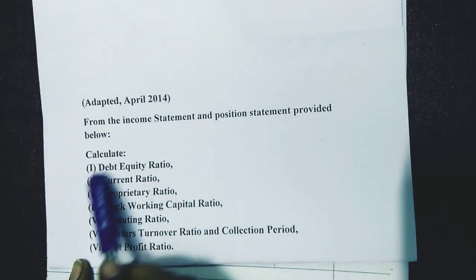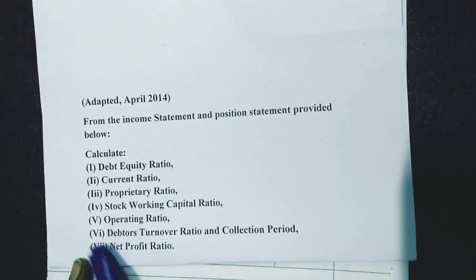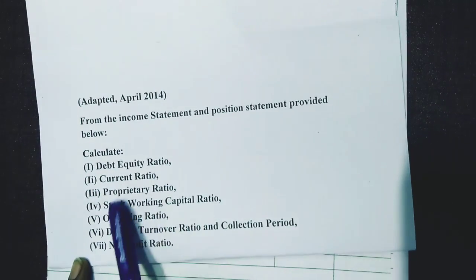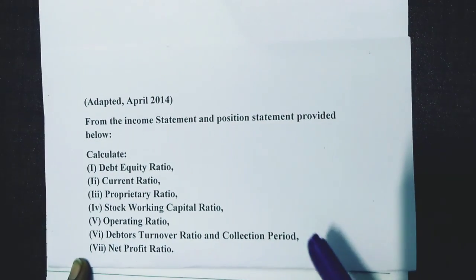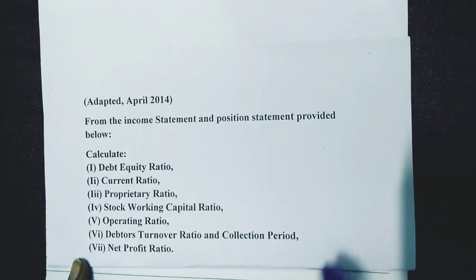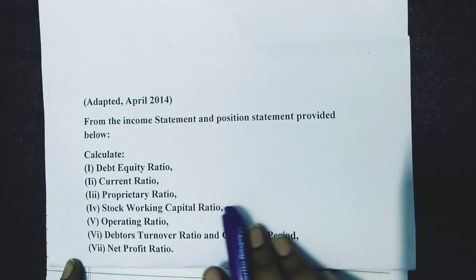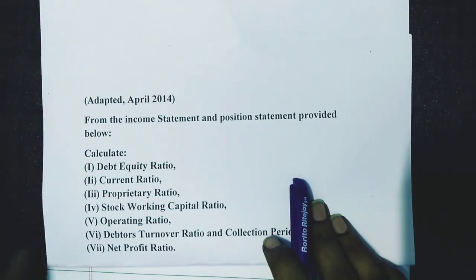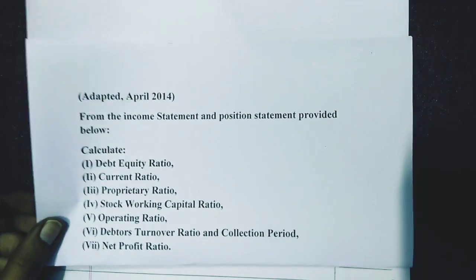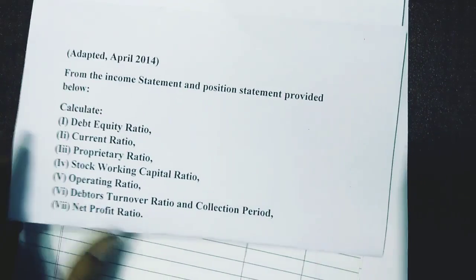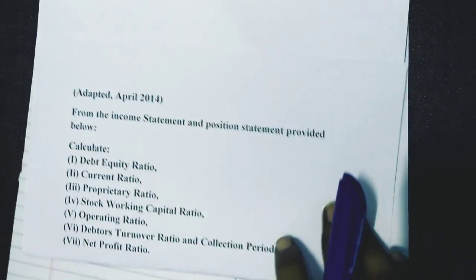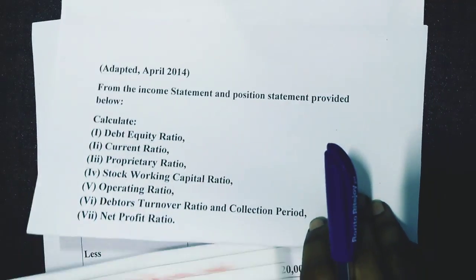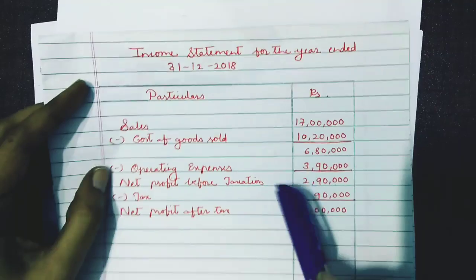If you write down all seven formulas correctly, you are going to get minimum seven marks and maximum eight marks. For the computation, if you do it correctly, you can score 15 out of 15 marks, and scoring 15 out of 15 is very easy. I have divided this question over three pages so we can solve the sum easily.